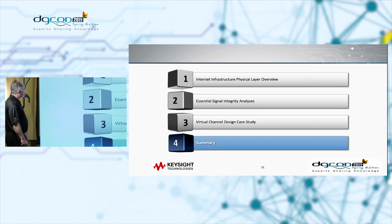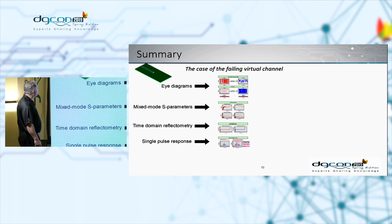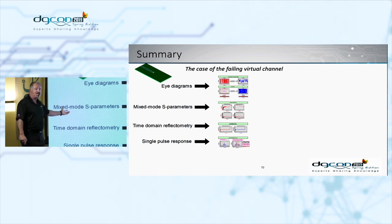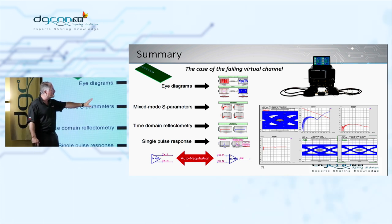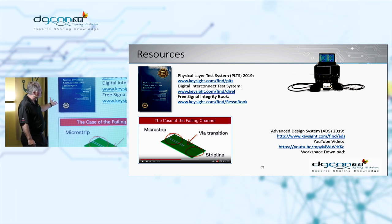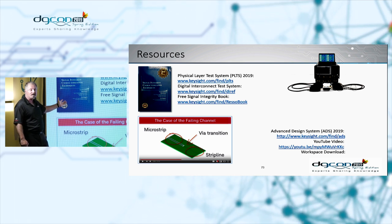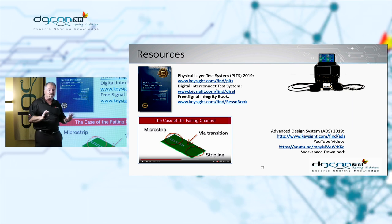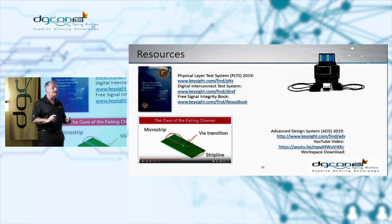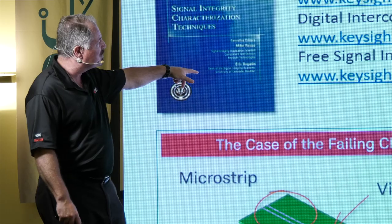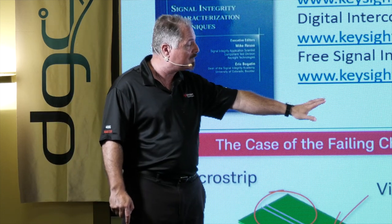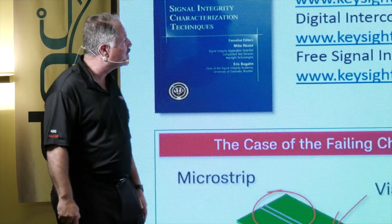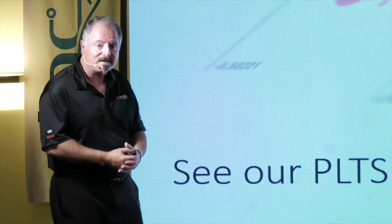To summarize the case of the failing virtual channel: we looked at various types of analyses and figures of merit — eye diagrams, mixed-mode S-parameters, TDR, and single pulse response. We can do it in both software and hardware and then correlate the two. We have technical library resources available — sign up with your contact information, strict anti-spam policies. You can download a free PDF of our Signal Integrity book co-authored with Dr. Bogatin, and explore workspaces in ADS, plus our YouTube channel. Toda — thank you very much.